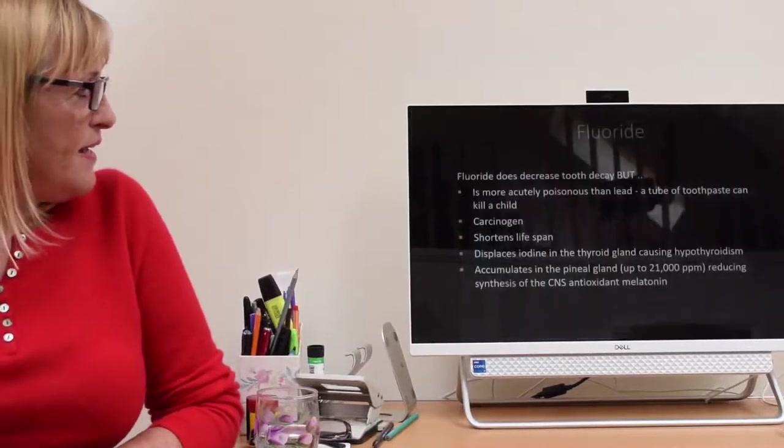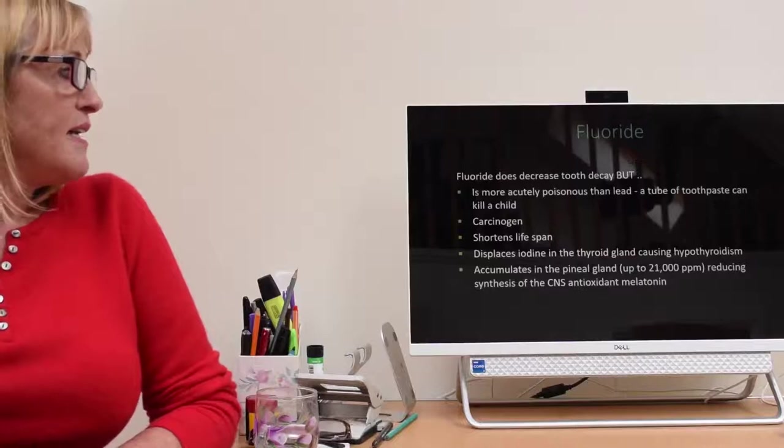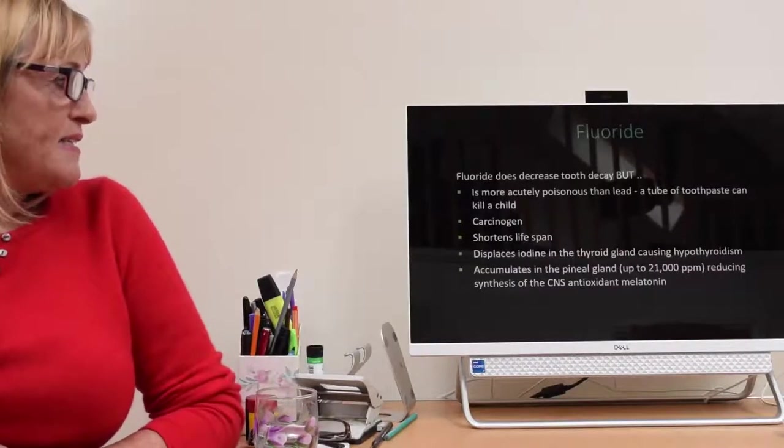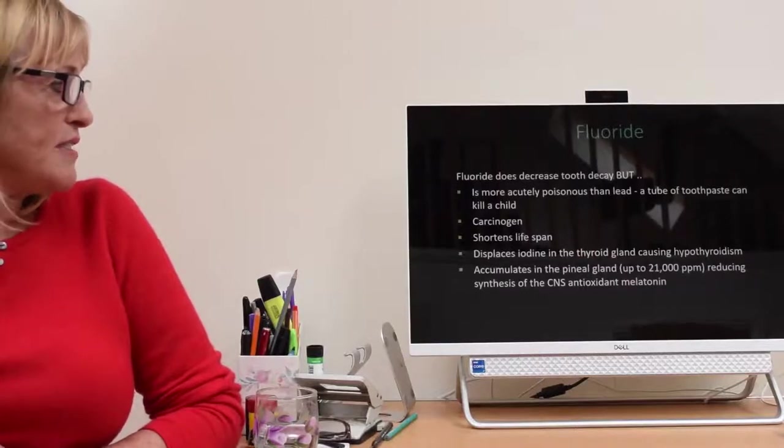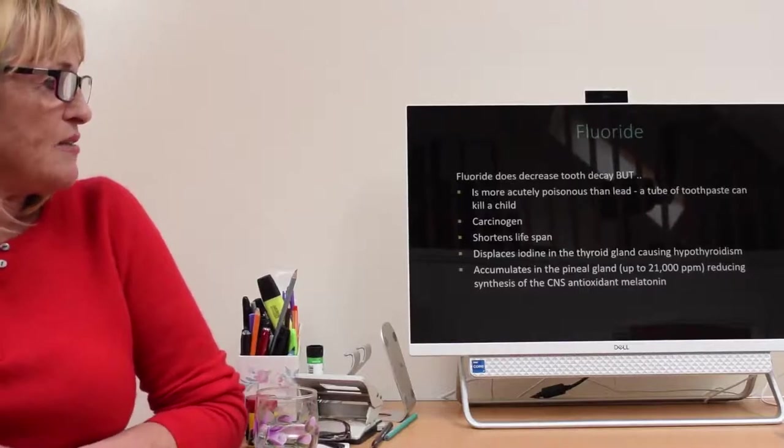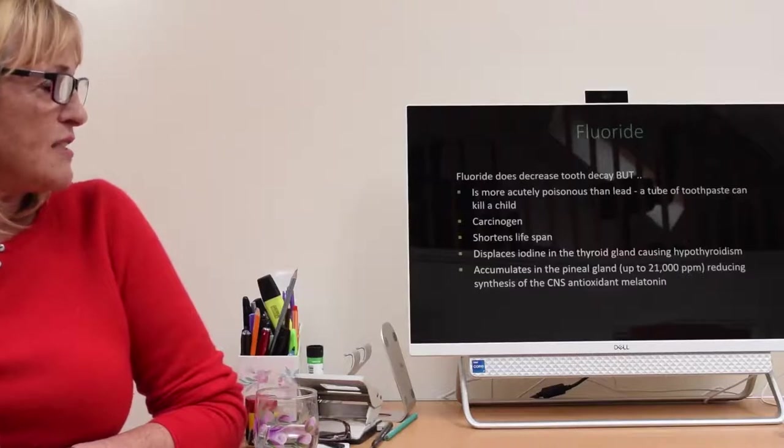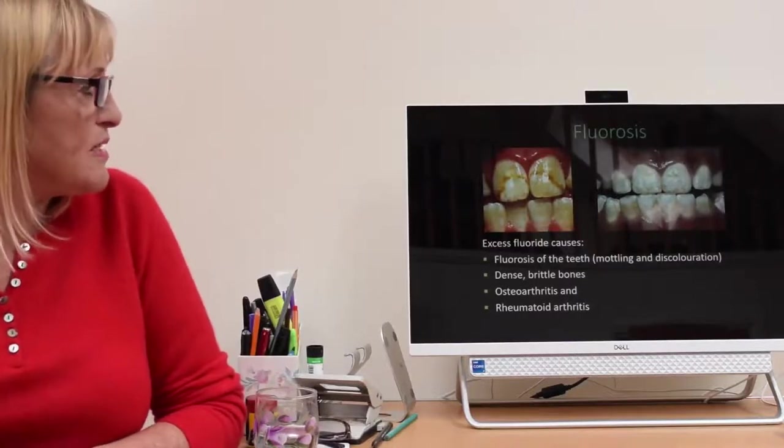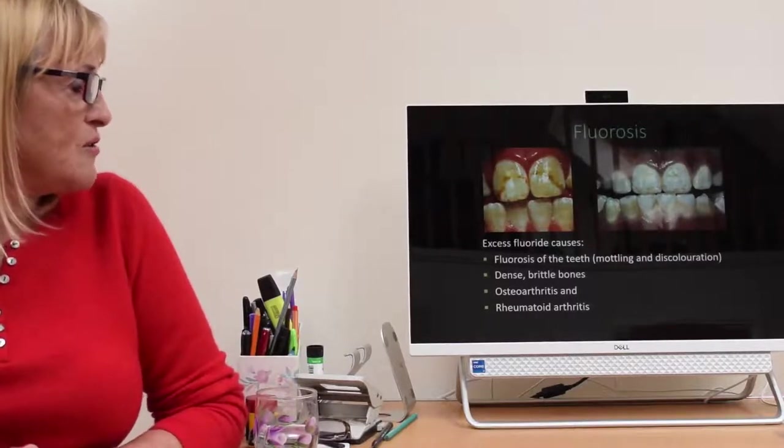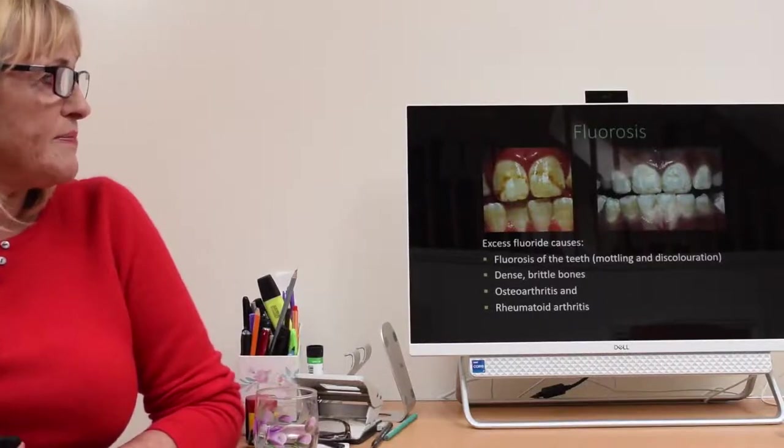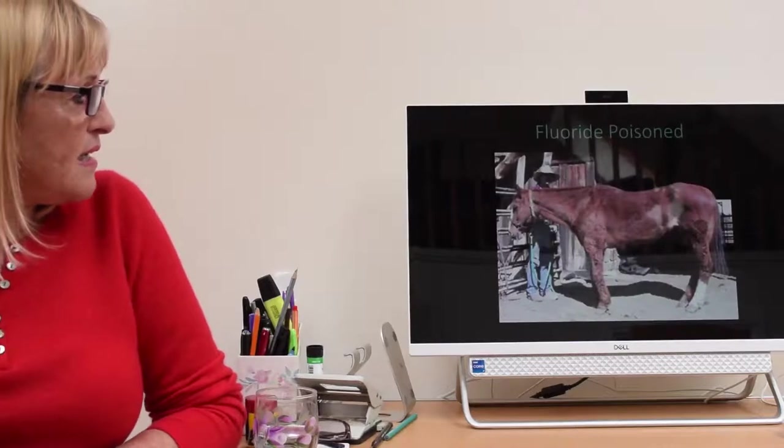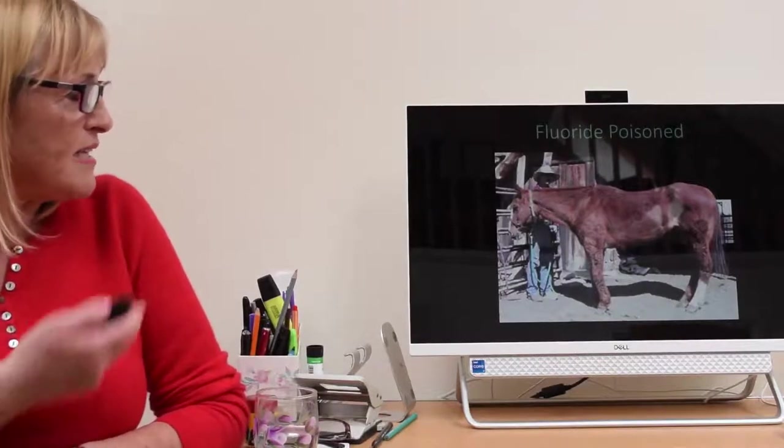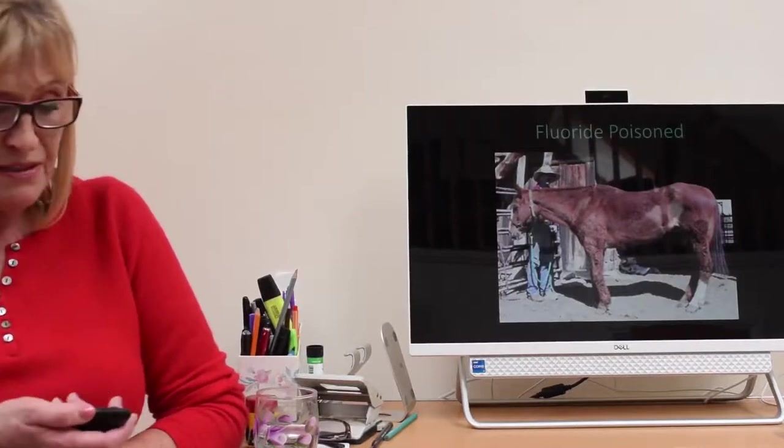Fluoride does decrease tooth decay but it's more acutely poisonous than lead and a tube of toothpaste can kill a child. It's a carcinogen. It shortens lifespan. It displaces iodine in the thyroid gland causing hypothyroidism and it accumulates in the pineal gland up to 21,000 parts per million reducing synthesis of melatonin. Fluoride in excess causes fluorosis which is this mottling of the teeth. It causes dense brittle bones, osteoarthritis and rheumatoid arthritis. This is a ranch in America where their horses all started ailing because they fluoridated the water supply. This is a sick horse purely because of fluoridated water.